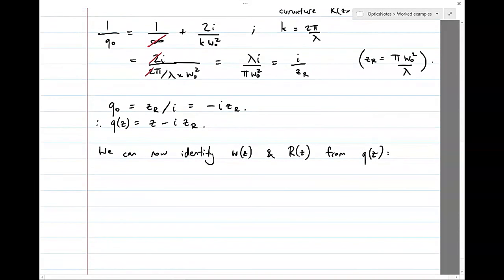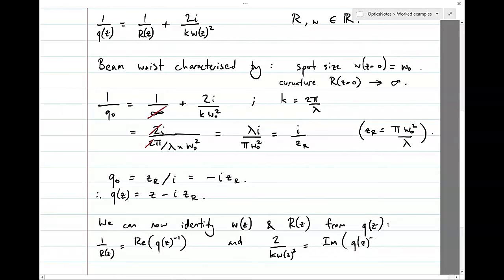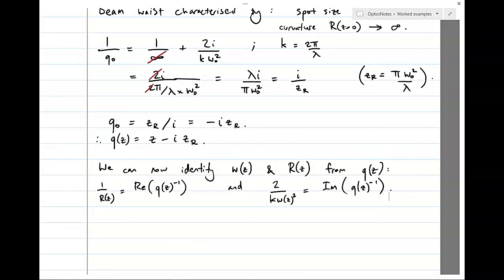So, you notice from the expression for 1 on Q that 1 on R is the real part of Q to the power of minus 1. And the second term in the real imaginary expansion of 1 on Q tells us that 2i on kW of Z squared is equal to the imaginary part. I'm sorry. I always do this with imaginary numbers. 2 on kW of Z squared is equal to the imaginary part of Q of Z to the minus 1.